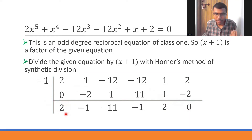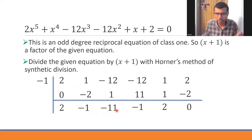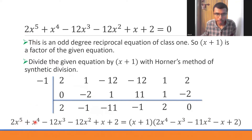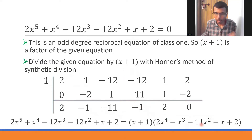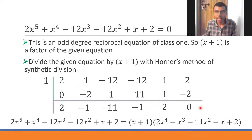The resulting values are the coefficients of our 4th-degree quotient polynomial: 2 is the coefficient of x⁴, -1 for x³, -11 for x², -1 for x, and 2 as the constant. So the original polynomial equals (x+1)(2x⁴ - x³ - 11x² - x + 2).